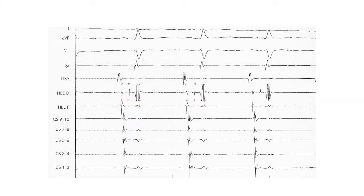The most important catheter to note is the His bundle distal catheter — the distal end is always labeled 1 and 2. In the His bundle electrogram, the first deflection is A (from the atrium), the last deflection is V (from the ventricle), and in between is the His deflection, which is very sharp compared to A and V — so you see A, H, V, A, H, V. In the CS catheter, A is larger because it's an atrial structure, and V is smaller.